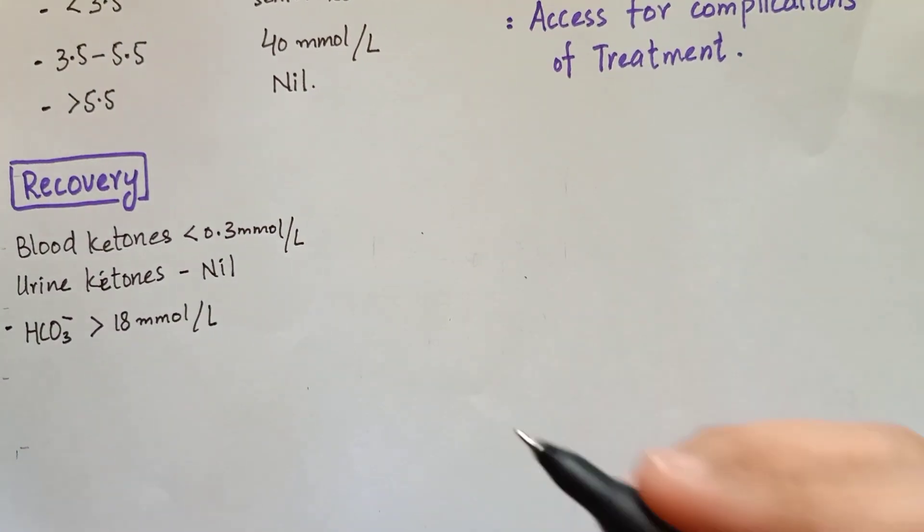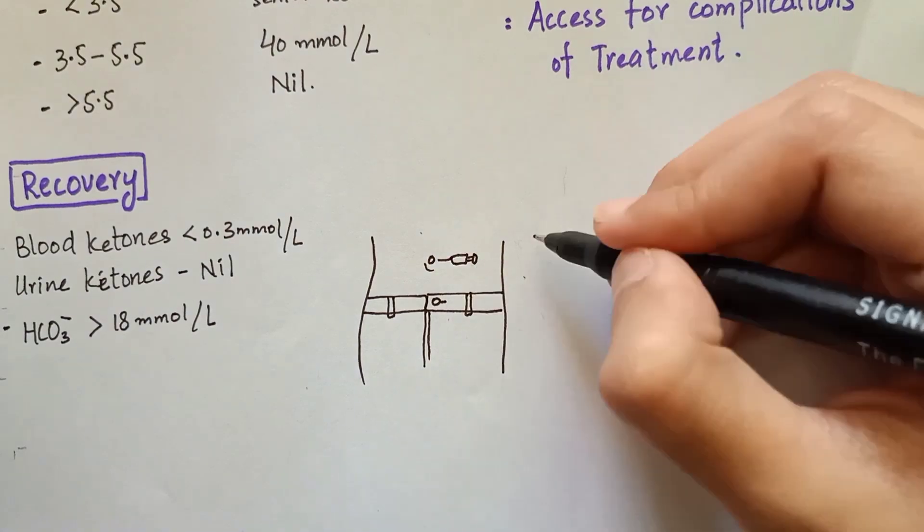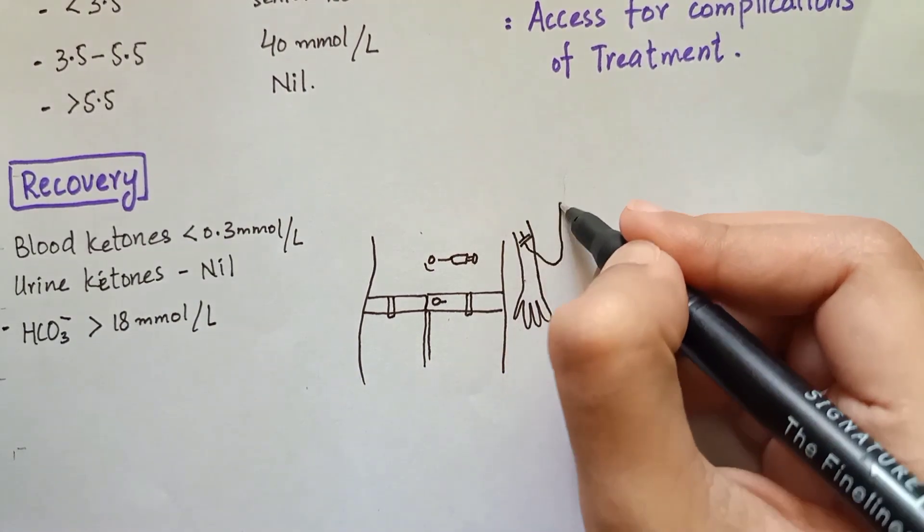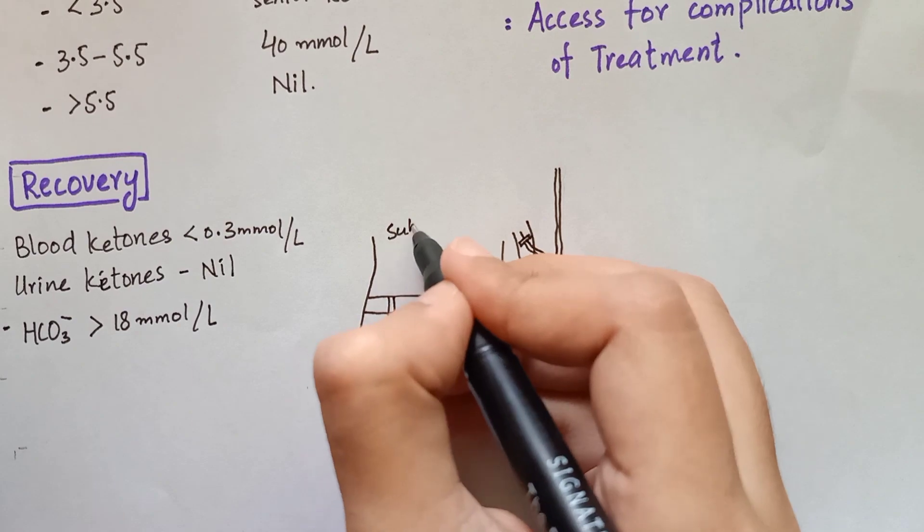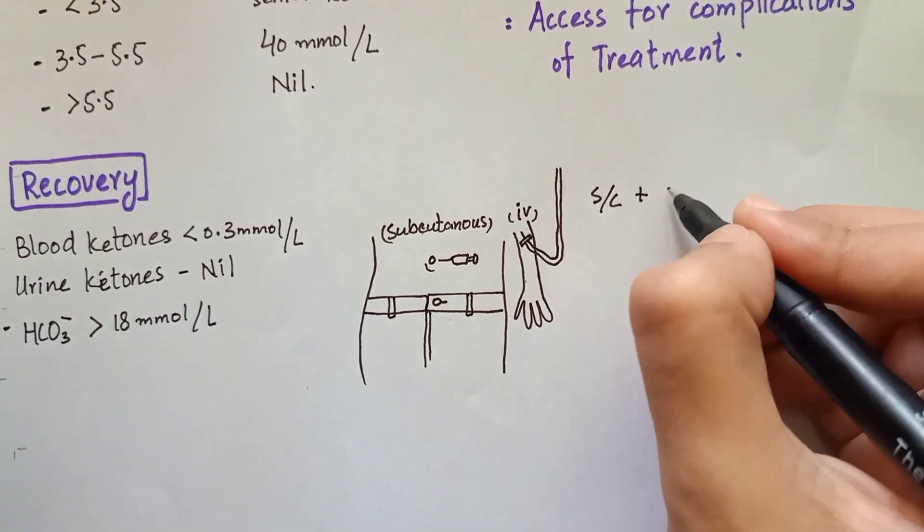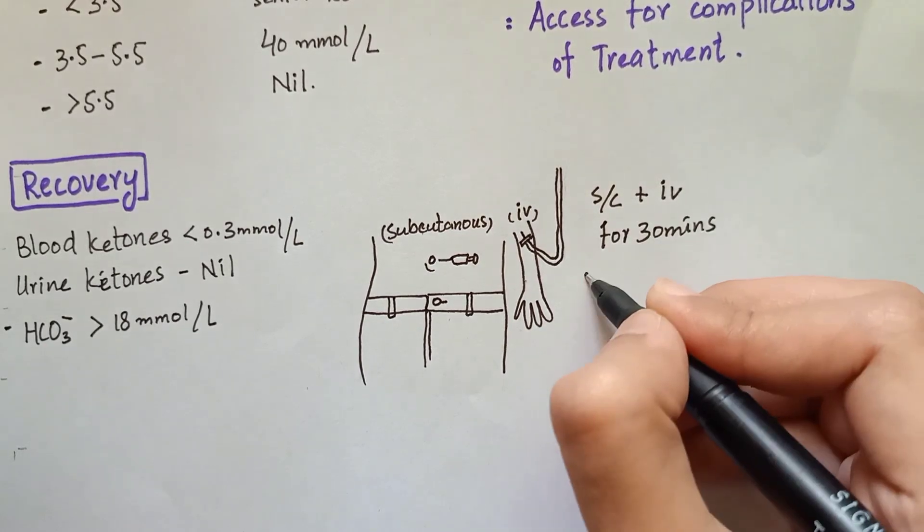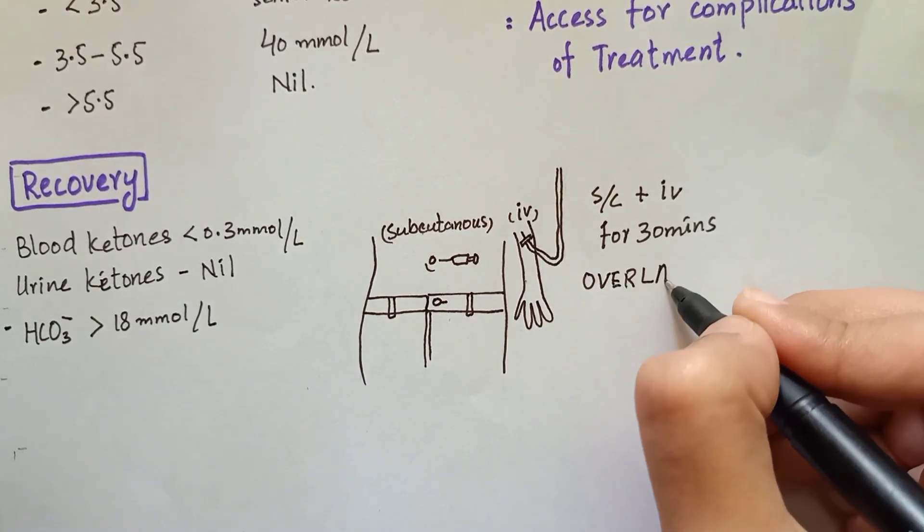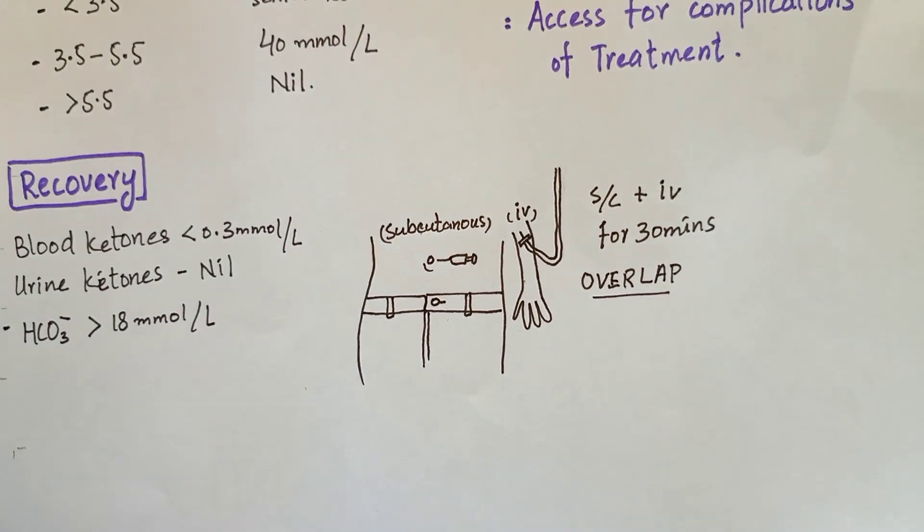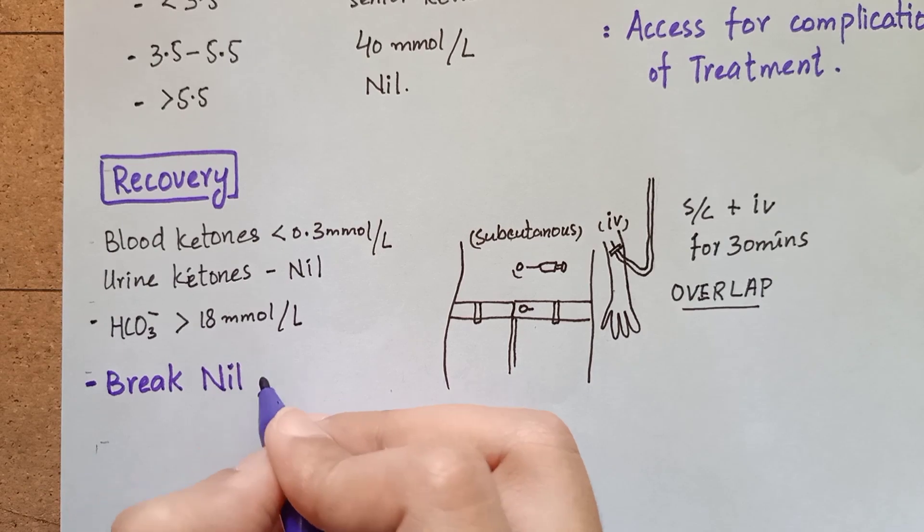You will give a subcutaneous injection of short-acting insulin 30 minutes prior to stopping intravenous insulin. This is called overlapping. You will encourage your patient to eat and drink.